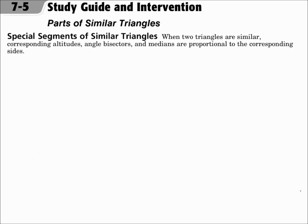This is lesson 7.5: Parts of Similar Triangles. The objectives are to recognize and use proportional relationships of corresponding segments of similar triangles, and to use the Triangle Angle Bisector Theorem. When two triangles are similar, corresponding altitudes, angle bisectors, and medians are proportional to the corresponding sides.